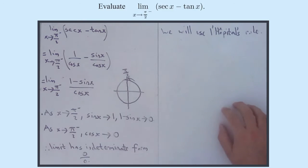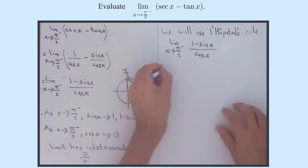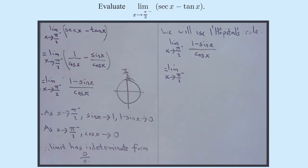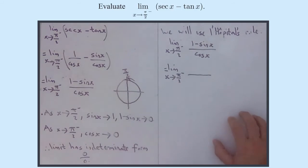So now, we know the limit as x approaches pi by 2 from something less than pi by 2 of 1 minus sine x over cos x equals the limit as x approaches pi by 2 from something less than pi by 2 of the derivatives. Well, 1 is a constant, so that disappears. Minus sine x will differentiate to minus cos x and cos x will differentiate to minus sine x.